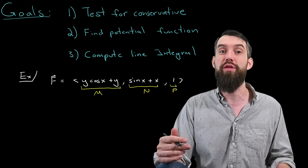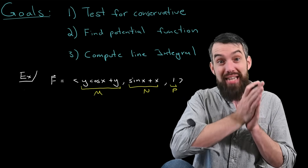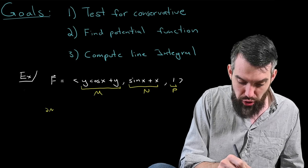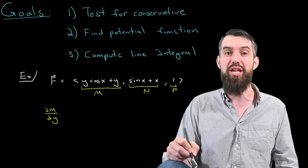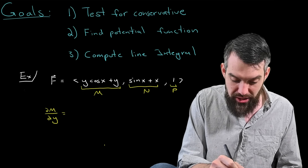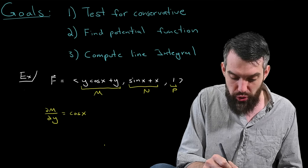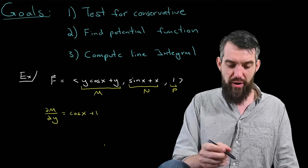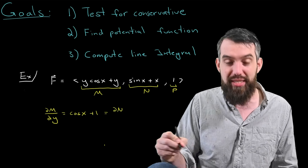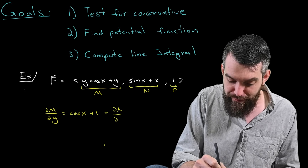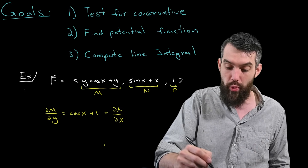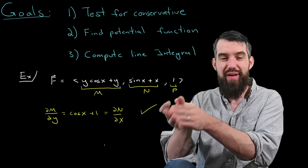Our first goal was testing to see whether the field was conservative. We had seen a test for conservative involving comparing partial derivatives. So the first thing I'm going to do is take the partial derivative of m with respect to y. Looking at m, which is y cos x plus y, the partial with respect to y gives cos x plus 1. And indeed, the partial derivative of n, which is sin x plus x, with respect to x is also cos x plus 1. So the first condition for being conservative has been verified.